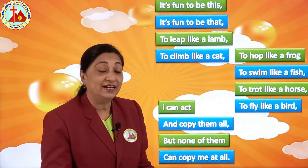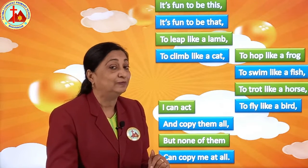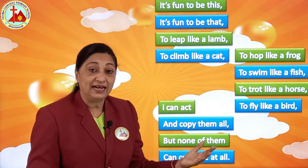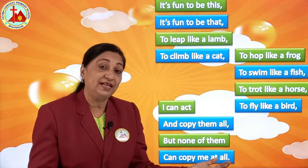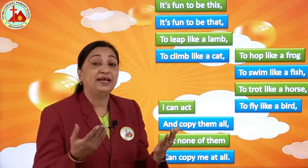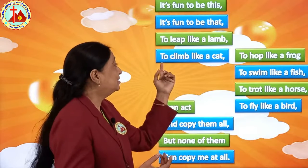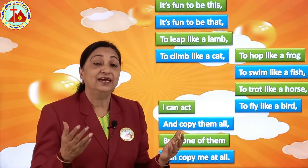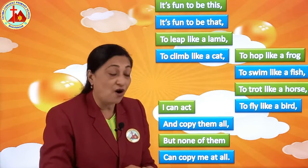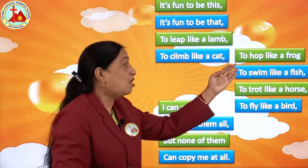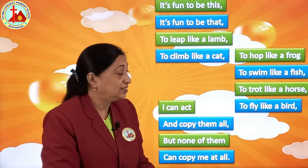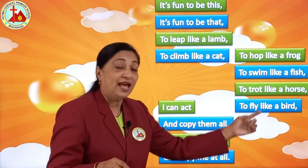Now let's go through the wording again. This is a recited one — we are not going to sing it. Now we will recite again. It's fun to be this, it's fun to be that. To leap like a lamb. To climb like a cat. To hop like a frog. To swim like a fish. To trot like a horse. To fly like a bird.